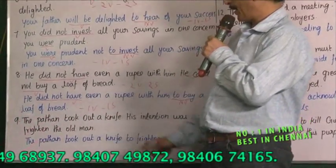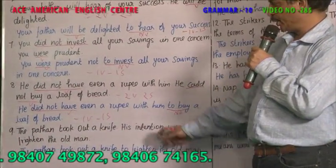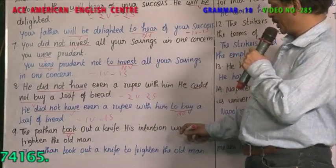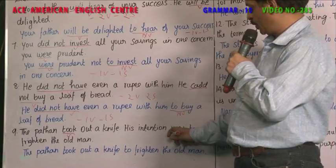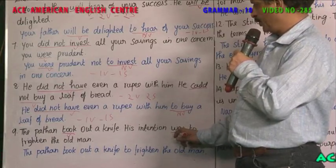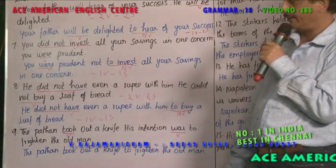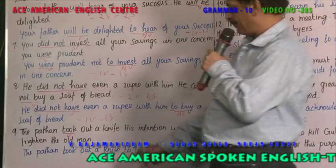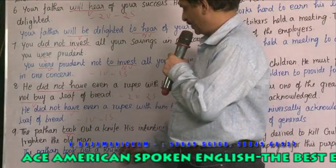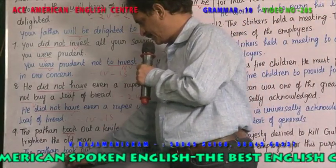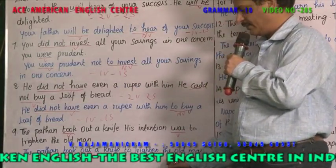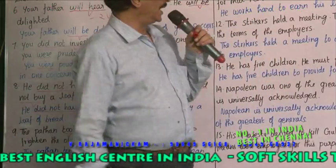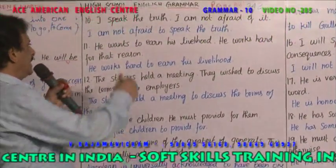Example 4: 'The pathan took out a knife' — 'took' is the verb. 'His intention was to frighten the old man' — 'was' is the verb; 'to frighten' is an infinitive, not a verb. Combined: 'The pathan took out a knife to frighten the old man.' Only one verb, so one sentence.